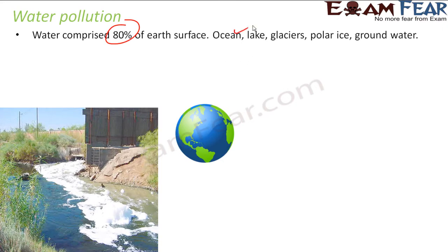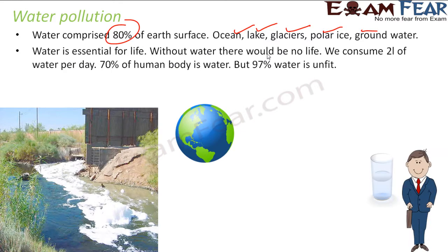Water exists in the form of oceans, lakes, glaciers, polar ice, and ground water. Water is very essential for us — we can't live without water, there will be no life without it.